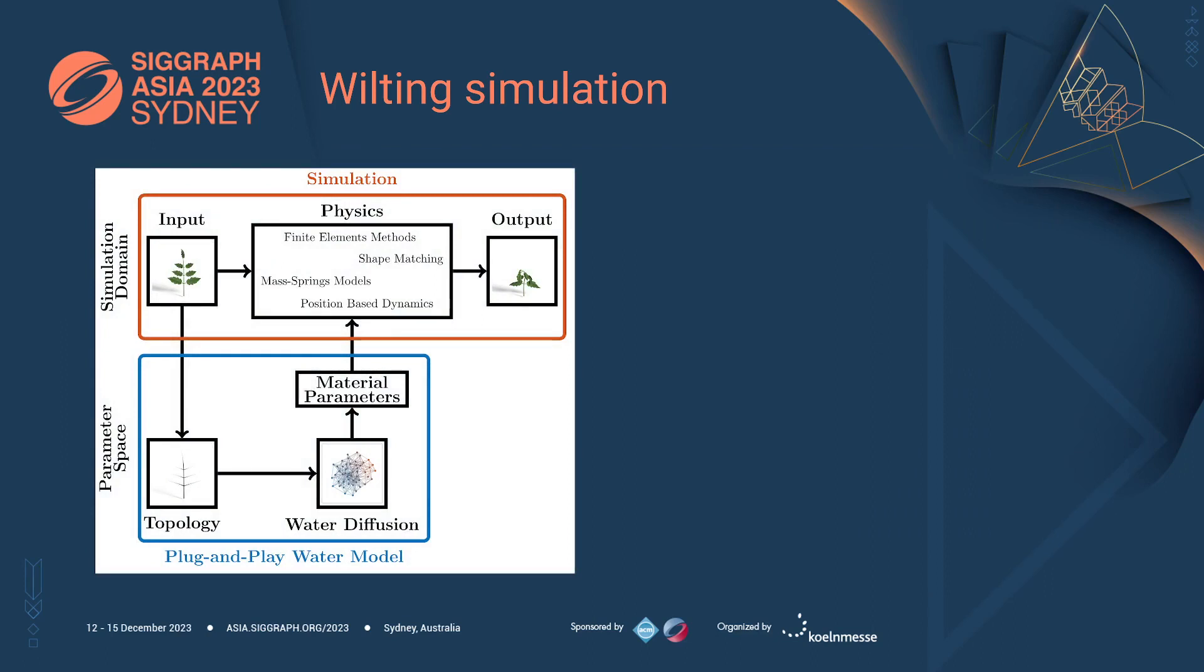Our model takes as input the topology of the plant and outputs the water distribution inside the plant. From the water distribution, we compute a set of material parameters that are then used by external solvers for the dynamics of deformable bodies, finally obtaining the wilting animation.